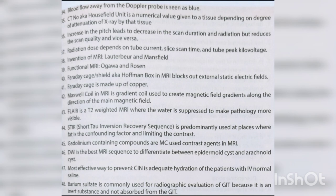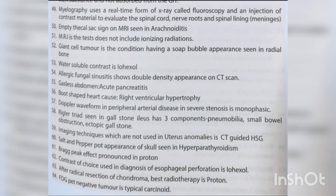DWI is the best MRI sequence to differentiate between epidermoid cyst and arachnoid cyst. The most effective way to prevent contrast-induced nephropathy (CIN) is adequate hydration with IV normal saline. Barium sulfate is used for radiographic evaluation of the GIT as it is inert and not absorbed. Myelography uses fluoroscopy and contrast injection to evaluate the spinal cord, nerve roots, and meninges. Empty thecal sac sign on MRI is seen in arachnoiditis.